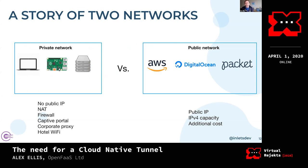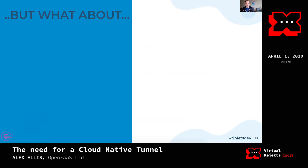On the private network you almost never have a public IP. You're dealing with NAT firewalls, sometimes a captive portal, a corporate proxy, and when you're traveling for business you may have hotel Wi-Fi too. If you're really unlucky, you have all of those at once. The alternative is the public cloud where you've got a public IP, loads of capacity, and can basically do whatever you want — but there is a cost. I thought: is there a way to get the best of both worlds?